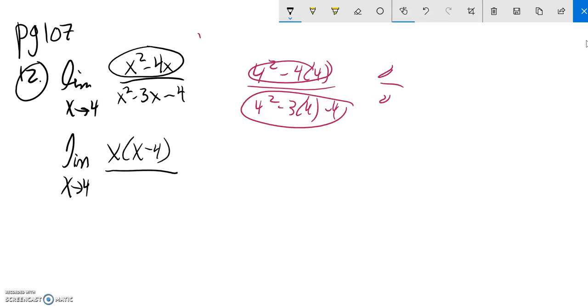And if I factor this down here, 4 and negative 1. Nope, negative 4 and positive 1. Multiply to negative 4, add to negative 3. So this factors to X minus 4 times X plus 1.